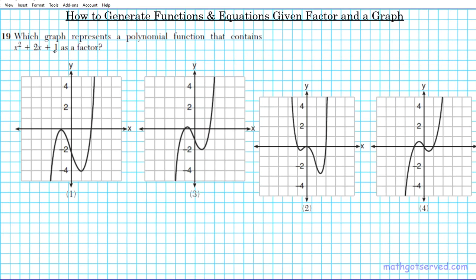If this is a factor, then what should the related function look like? That's what we're trying to do here. We have x squared plus 2x plus 1 as a factor, so we can easily use the factors to determine the roots or x-intercepts of the related quadratic function. We're going to set this to zero to find the zeros of this quadratic equation, and it will tell us what the roots of the actual graph will look like.